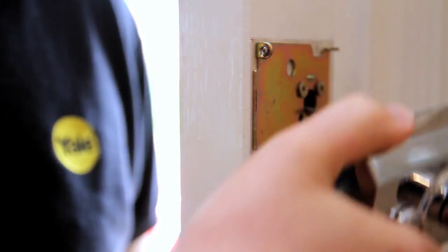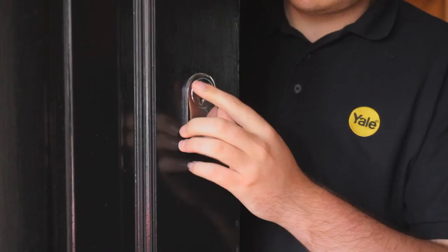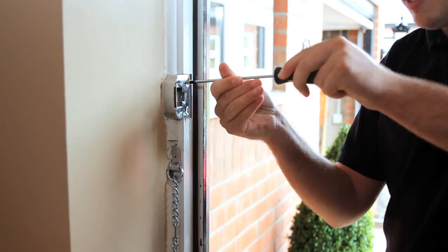Next, disassemble your existing night latch by first taking out these two screws and removing your night latch case. Take out all of the screws from the mounting plate and remove. This will enable you to remove the lock from the front of the door at the same time.